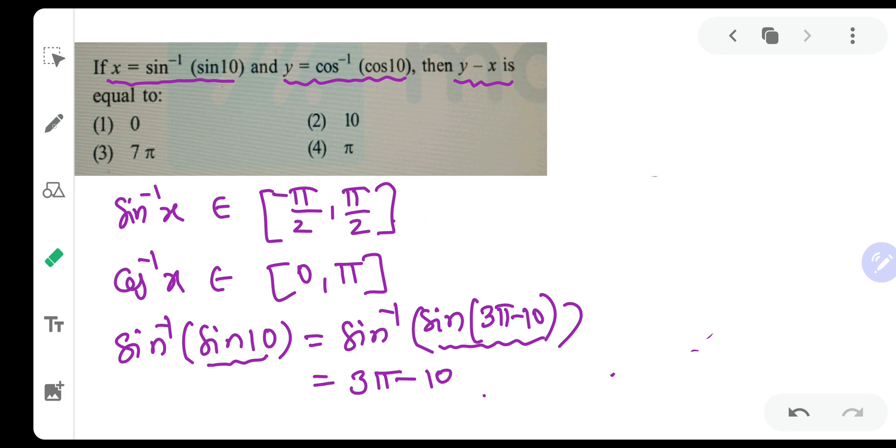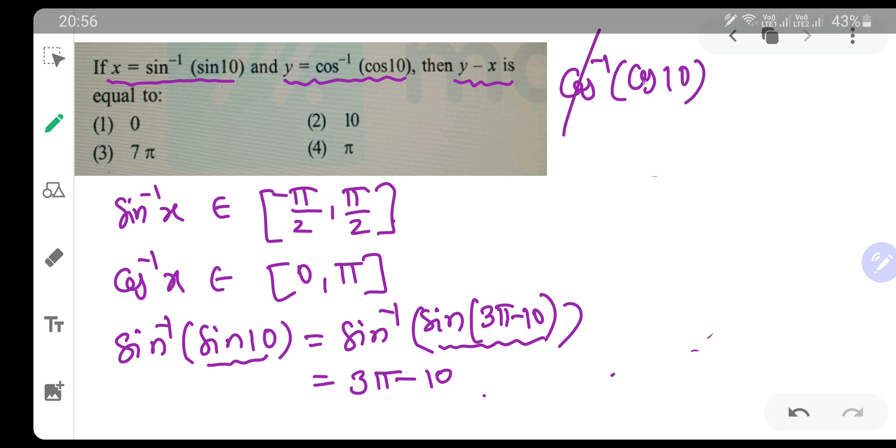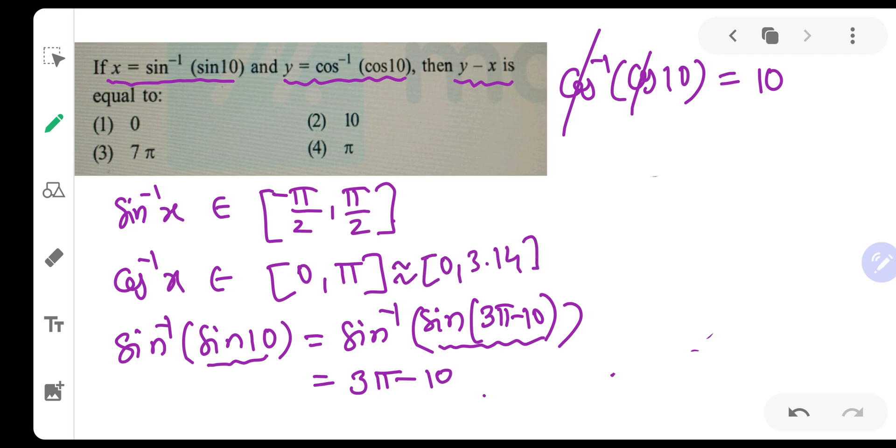Now, as you can see cos inverse of cos of 10 they have asked. If you cancel cos inverse cos and write down 10, 10 does not lie in this range 0 to 3.14. So it will be totally wrong. For cos inverse you should always try even multiples of pi. And for sin inverse of sin, you should try odd multiples of pi. So let me write down this as cos of 4 pi minus 10.